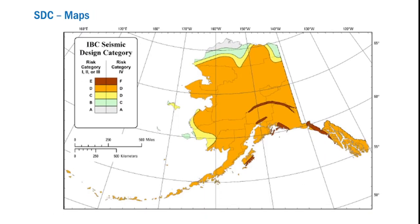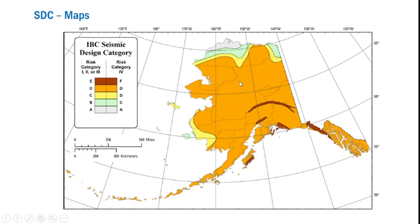It is worth noting that ASCE 7-22 does not provide maps for the SDCs, but if you look at IBC — the latest version, 2024 — it provides SDC maps for many locations. A typical SDC map uses color coding to identify the SDC category for any location. For risk categories 1, 2, or 3, the color coding defines SDC E, D, C, B, A, etc. Whereas for risk category 4 structures, the color coding pertains to F, D, C, B, A, etc. Using the color coding and the risk category, you can exactly locate the corresponding SDC for a structure at any given site.